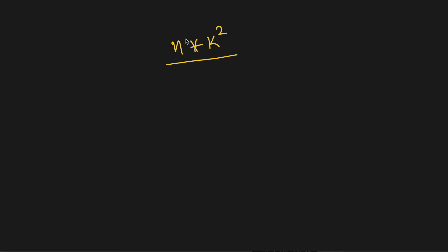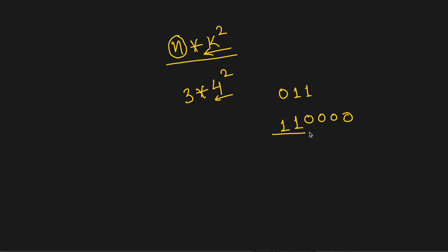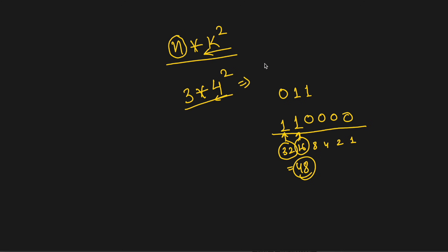Now we know what the left shift operator is, and we'll use it to compute this function. If we take the binary representation of n and do a left shift by k places, that gives the output. For example, with n=3 and k=4: the binary of 3 is 011. Left shifting by 4 places gives 1100000, which equals 32+16 = 48. That matches 3 into 2^4 = 48.